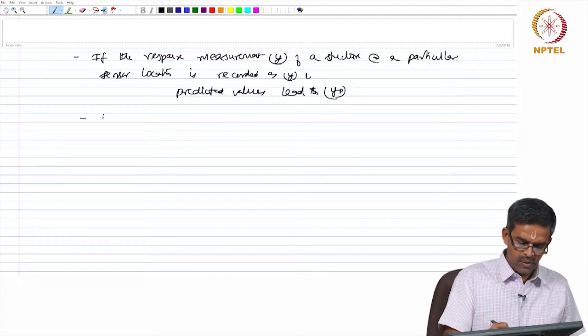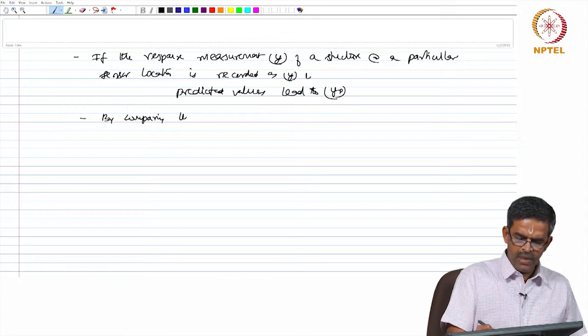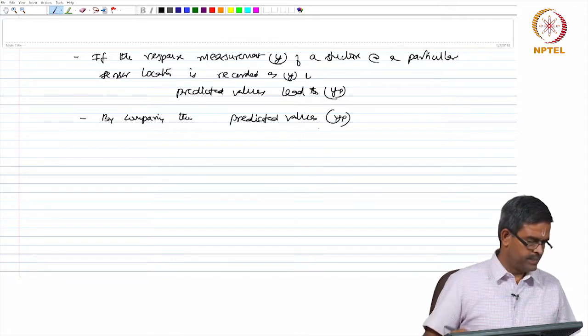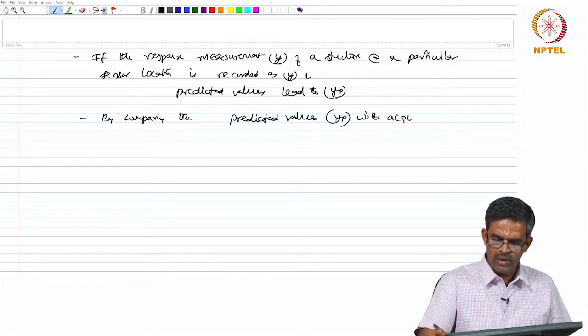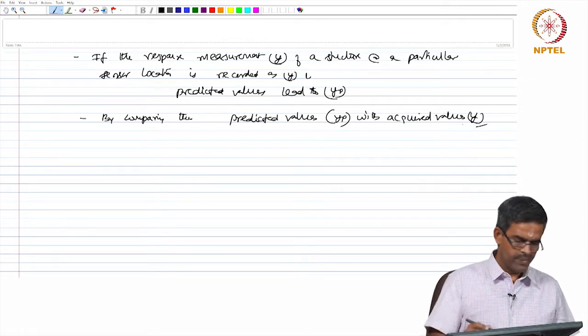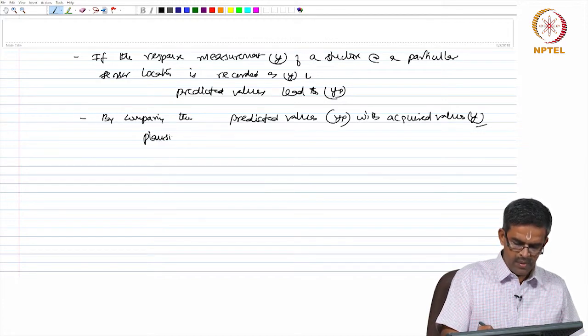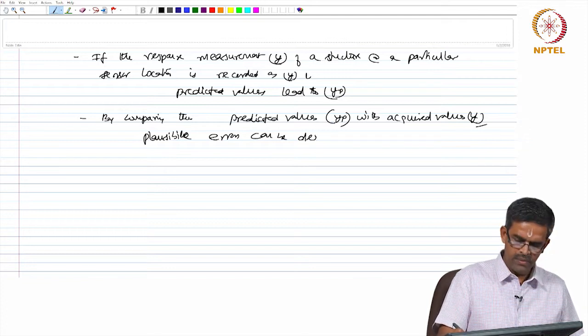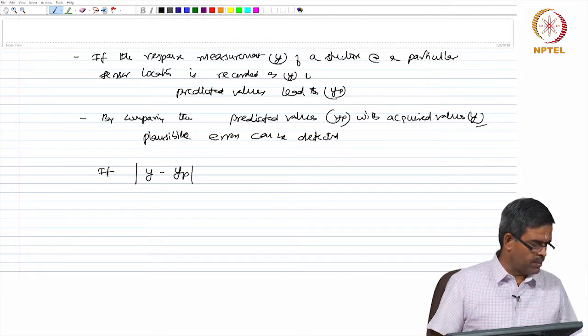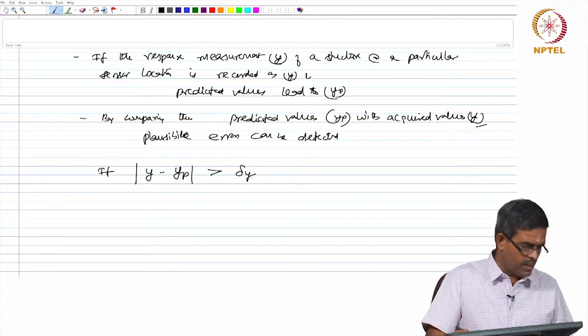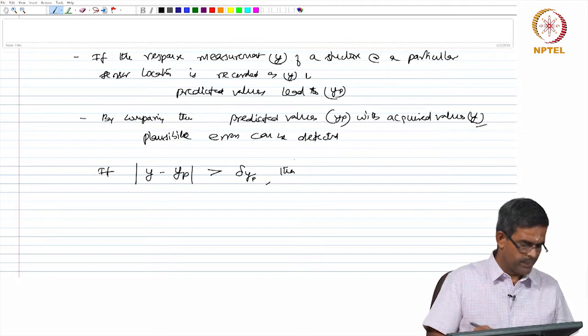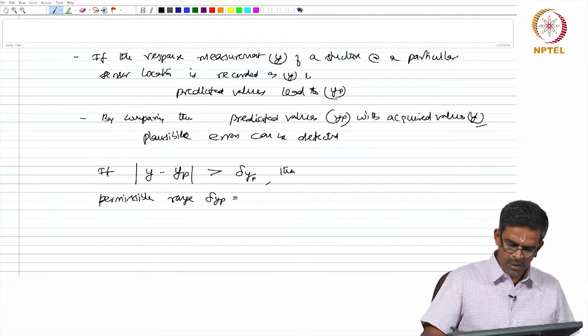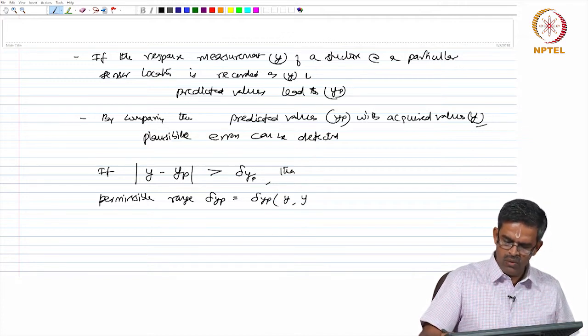By comparing the predicted values Yp with acquired values Y, plausible errors can be detected. If |Y minus Yp| is greater than delta Yp, then the permissible range delta Yp will be a function of the measured value and the predicted value. Therefore, it depends on the kind of project of SHM.